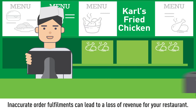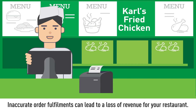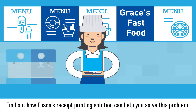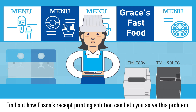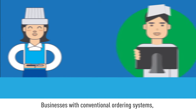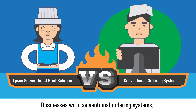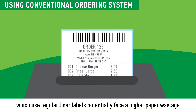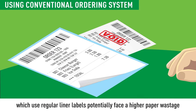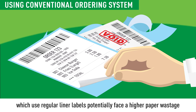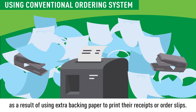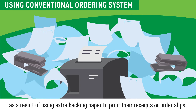Inaccurate order fulfilments can lead to a loss of revenue for your restaurant. Find out how Absinthe's receipt printing solution can help you solve this problem. Businesses with conventional ordering systems, which use regular liner labels, potentially face a higher paper wastage as a result of using extra backing paper to print their receipts or order slips.